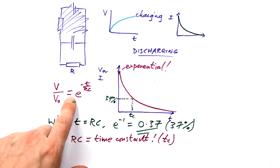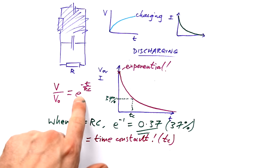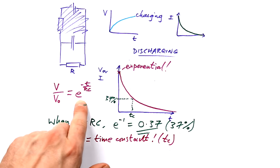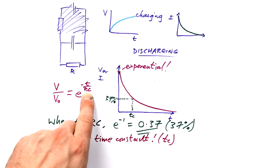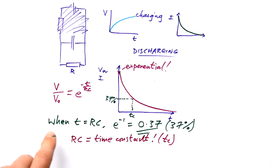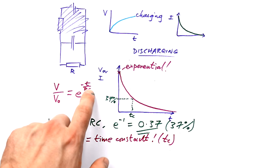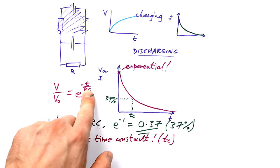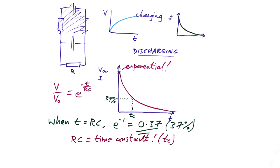To find the ratio V/V₀ at a given time, just plug in the values of t, R, and C. If you're solving for one of those quantities instead, take the natural log of both sides and rearrange to find time, resistance, or capacitance. If asked to find the time constant directly, you can use the fact that ln(0.37) gives you −1, so the time constant equals RC.